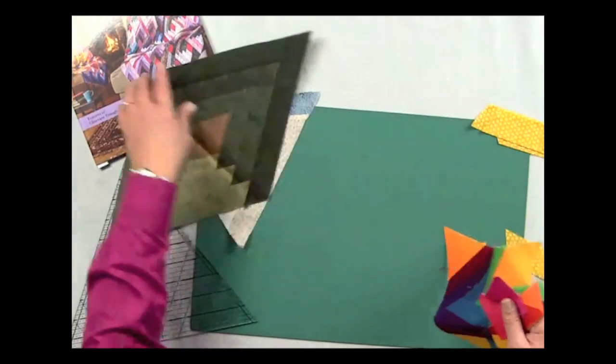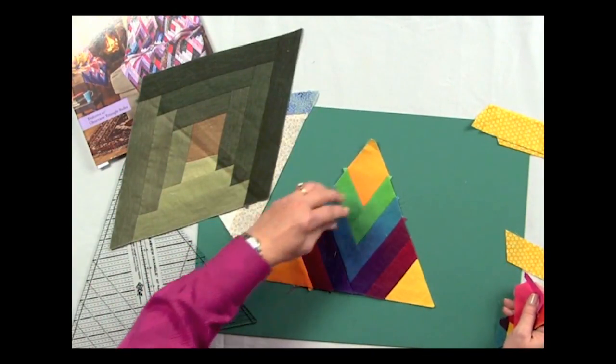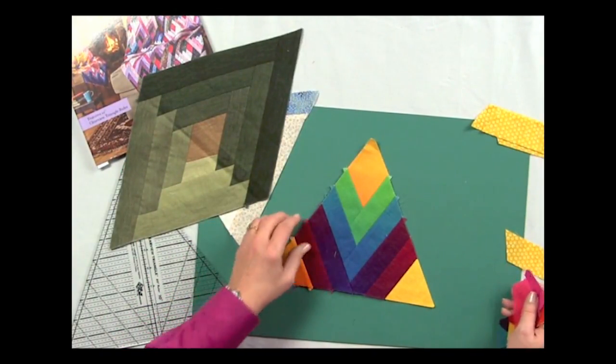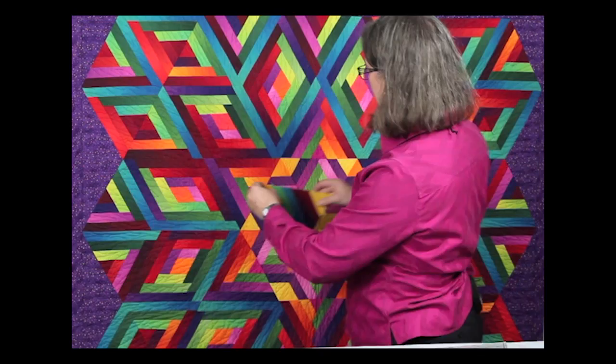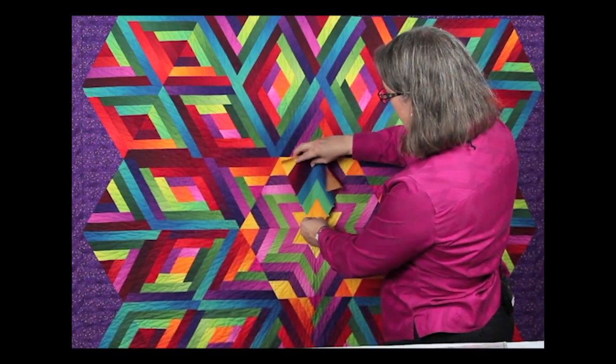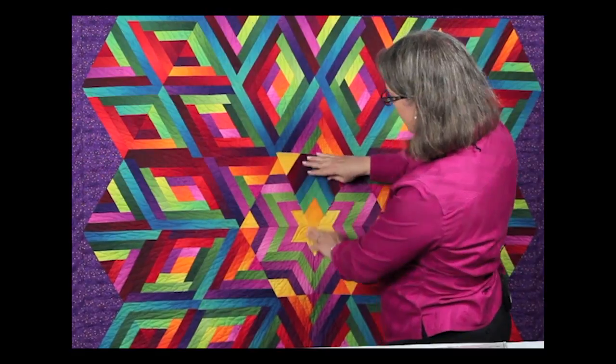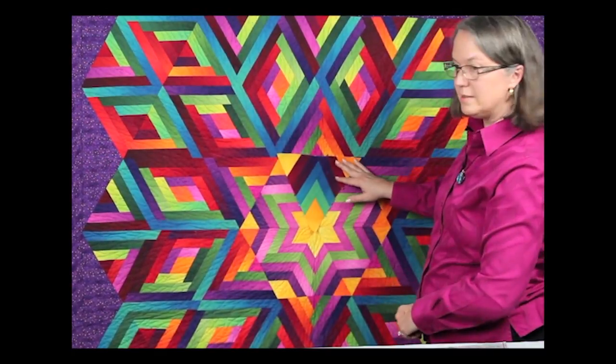That's our diamond block, and then we can have one that's a diamond block with a triangle block added on either side. This one goes in the center of this quilt behind me, and you can see how that fits into the design.